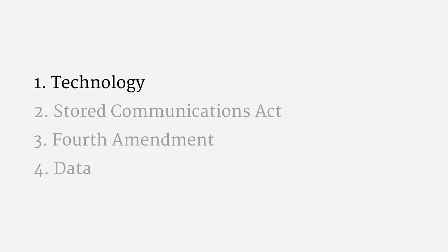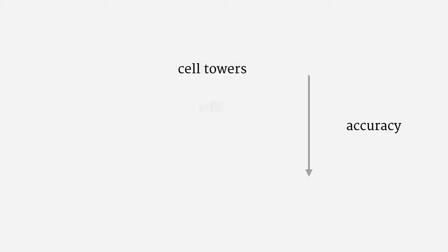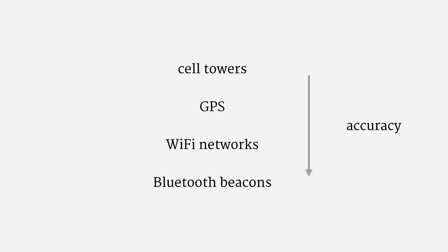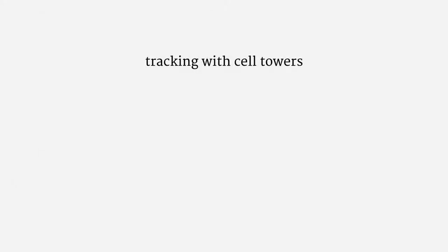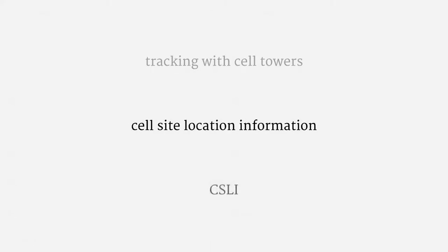Let's start with the technology. There are quite a few ways to locate a cell phone, including, in rough order of increasing accuracy: cell towers, the satellite-based global positioning system, nearby Wi-Fi networks, and low-power Bluetooth beacons. We're going to focus on cell towers, since they're the most easily accessible and most commonly used form of tracking data in law enforcement investigations. The same principles of law would generally apply to these other technologies. That sort of data is usually called Cell Site Location Information, or CSLI for short.